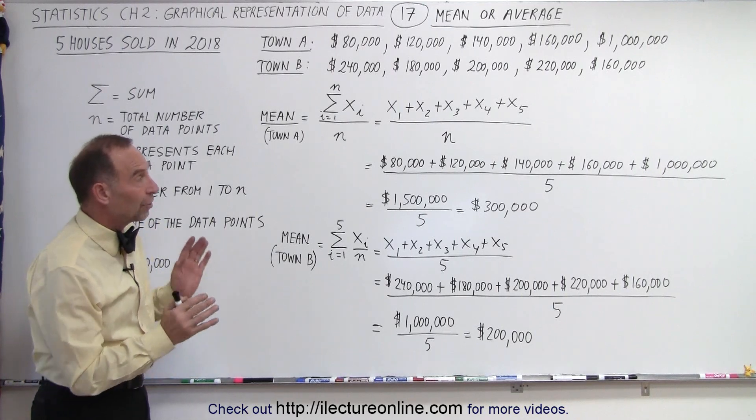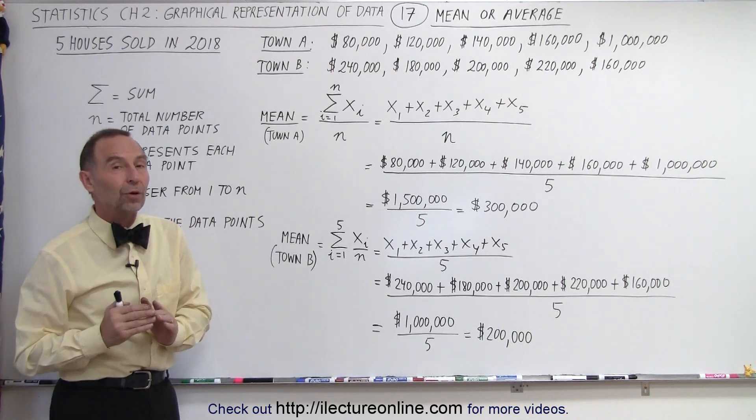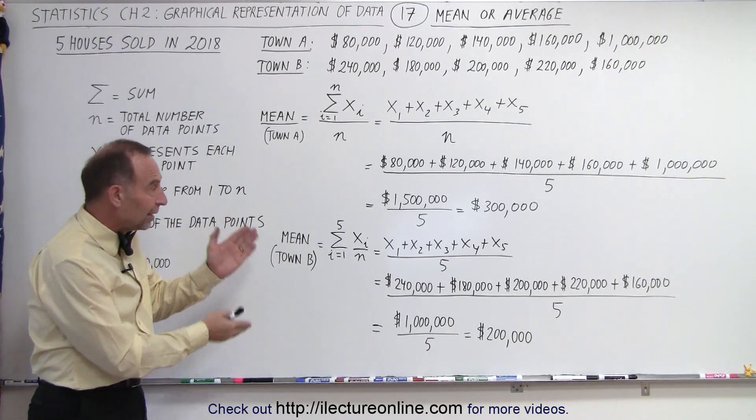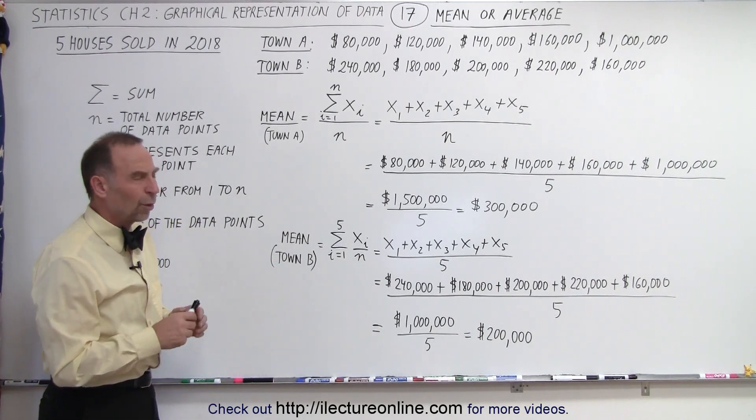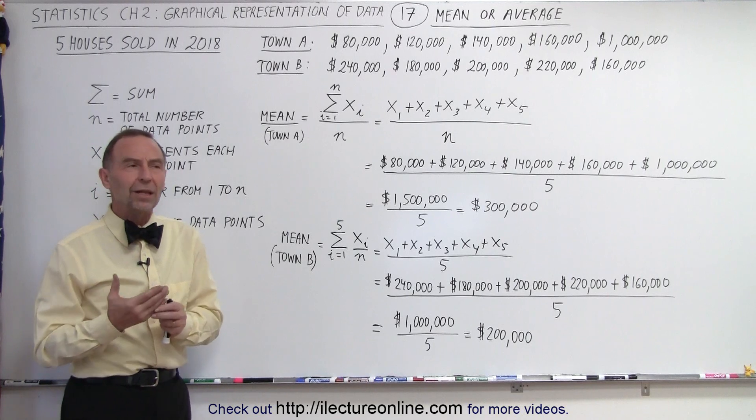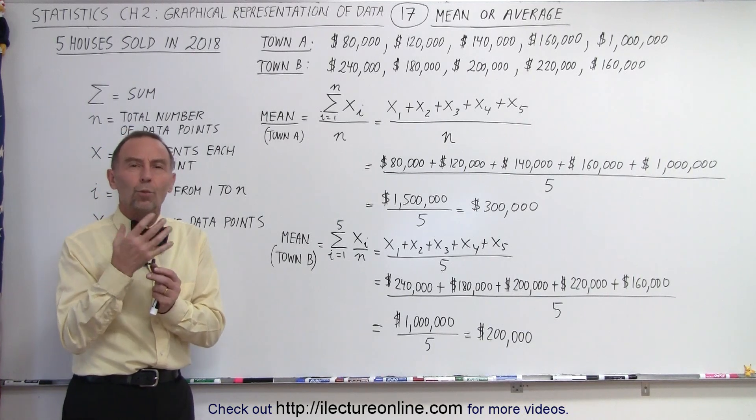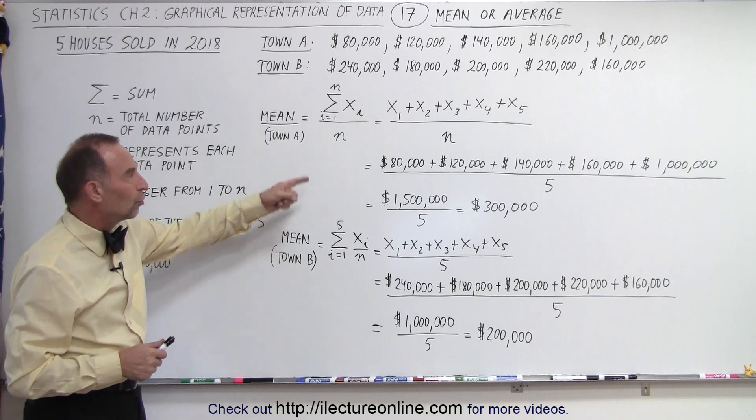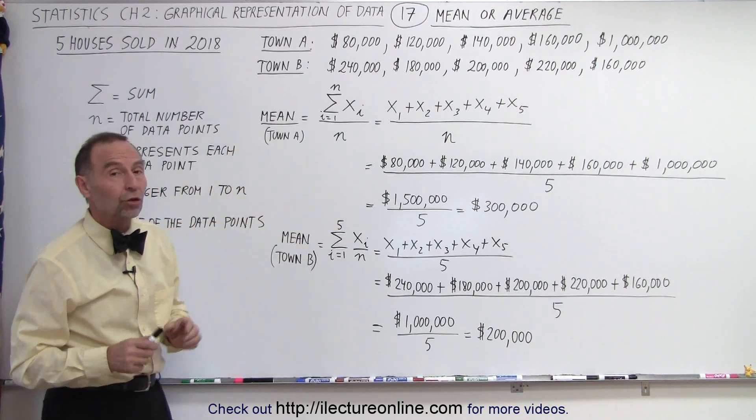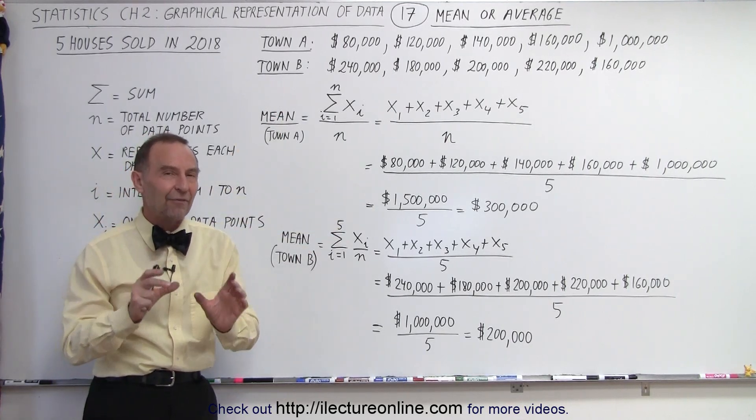Now also notice that there were only five data points, and when there's few data points this apparent abnormality gives you a wrong indicator, an incorrect indicator if you're going to use a small data set and you're looking at just the mean.